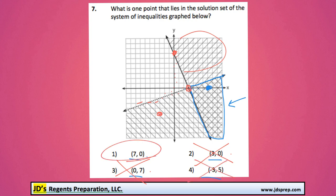So option number 1 is the correct answer, because (7, 0) is in this area that's part of the solution set.